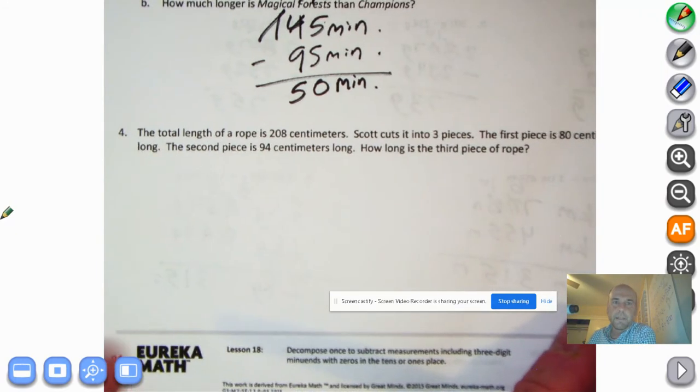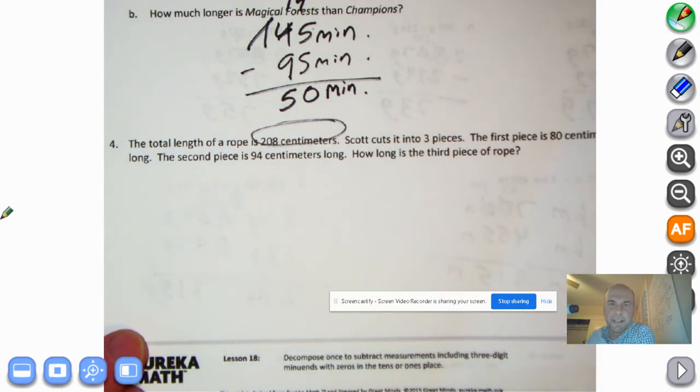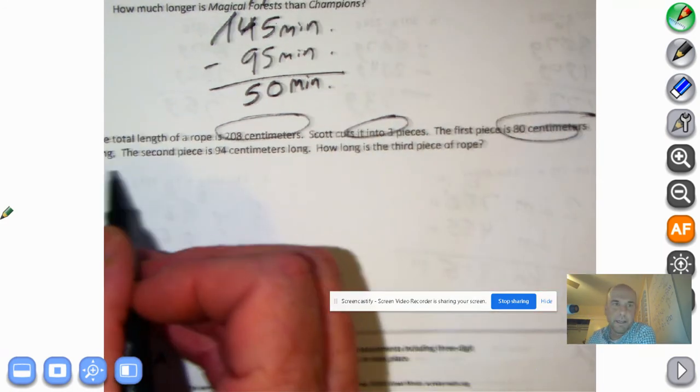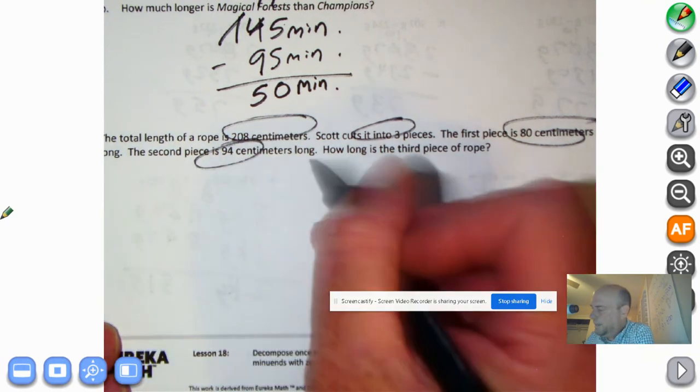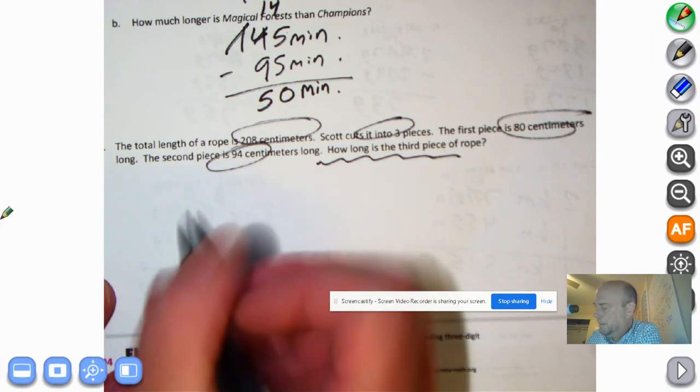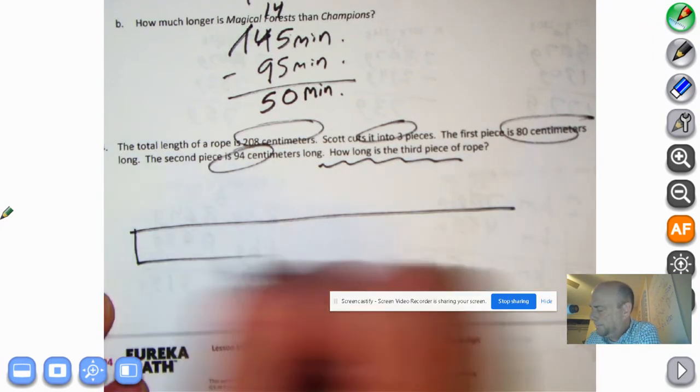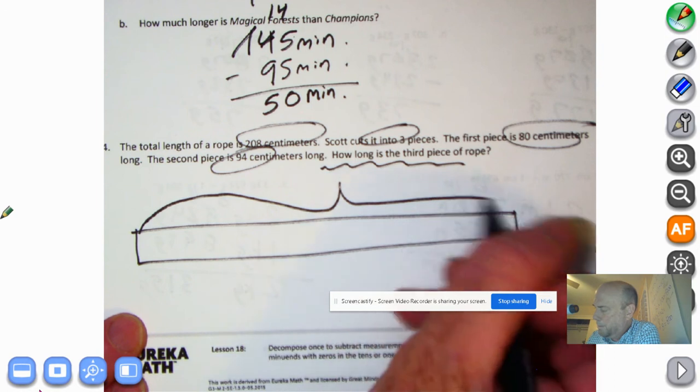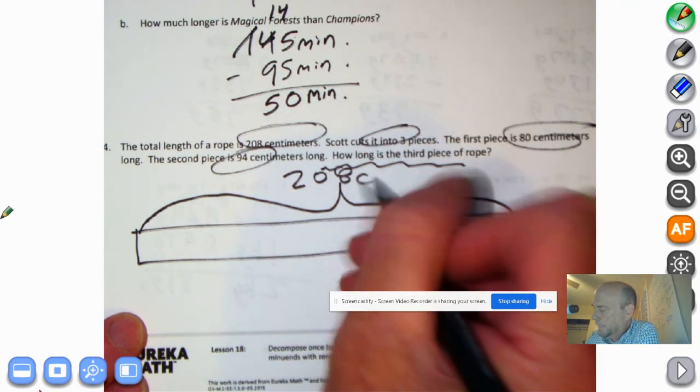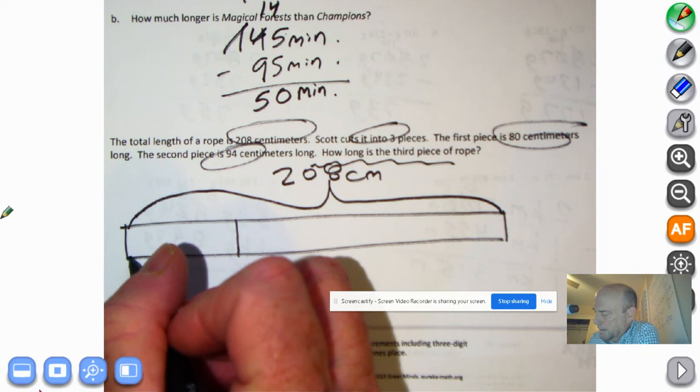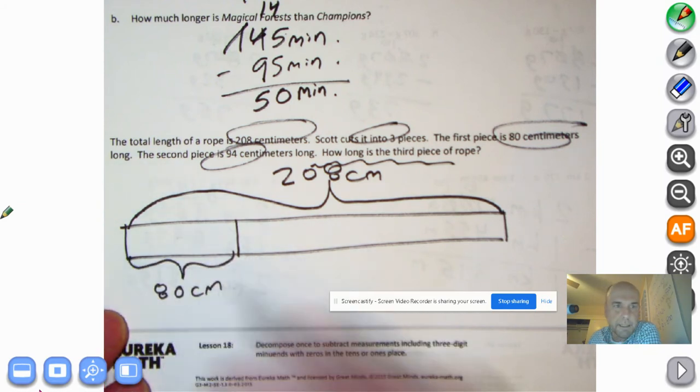Our last problem. The total length of a rope is 208 centimeters. I'm going to circle that. Scott cuts it into three pieces. That's going to be important. The first piece is 80 centimeters long. The second piece is 94 centimeters long. How long is the third piece of rope? Alright, we're going to make a tape diagram because this is a really complicated problem. The total length of the rope is 208 centimeters. The first piece is 80 centimeters. The second piece is 94 centimeters.